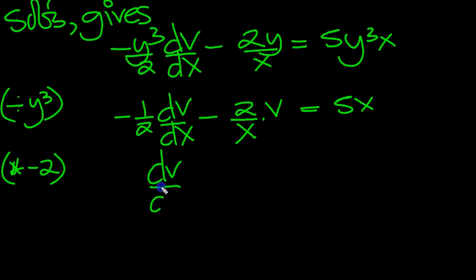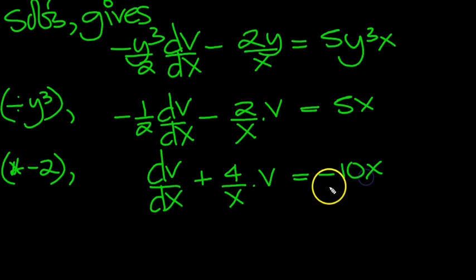Now times by 2 with a minus to make sure that ends up being 1. So we end up with dv/dx then. Now times by minus 2, that'll be a plus. And that'll be a 4 over x times v equals minus 2 times 5 is minus 10x. So here's our p. We've got integrating factor method here.